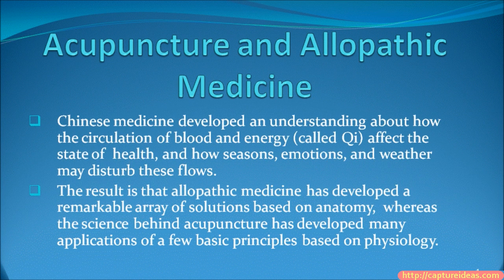Chinese medicine developed an understanding about how the circulation of blood and energy — called QI — affects the state of health, and how seasons, emotions, and weather may disturb these flows. The result is that allopathic medicine has developed a remarkable array of solutions based on anatomy, whereas the science behind acupuncture has developed many applications of a few basic principles based on physiology.